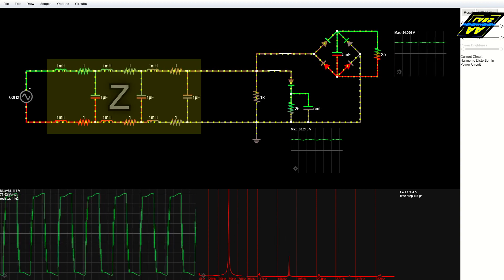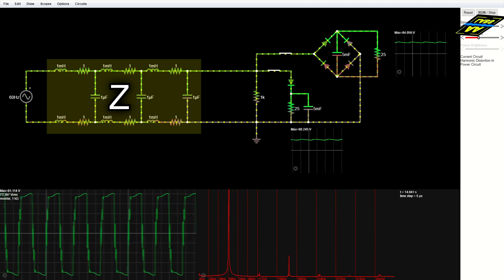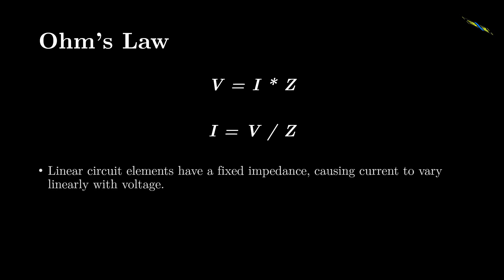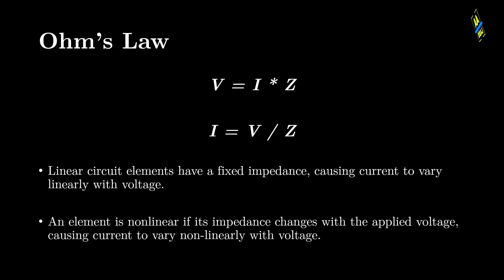Together, we call these properties impedance and can represent it with the symbol Z. Ohm's law states that voltage is equal to current times impedance, or V equals I times Z. It can also be written as I equals V divided by Z. Linear circuit elements have a fixed impedance, causing current to vary linearly with voltage. An element is nonlinear, however, if its impedance changes with the applied voltage, causing current to vary nonlinearly with voltage. The second case could be represented more accurately by rewriting Z as some function of V.